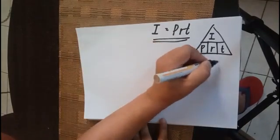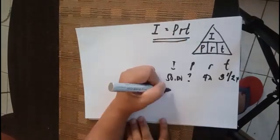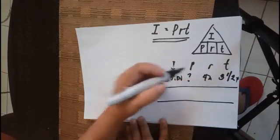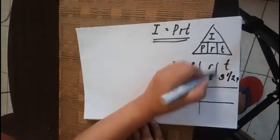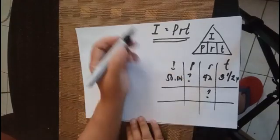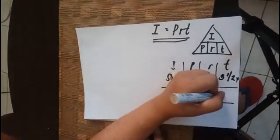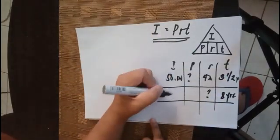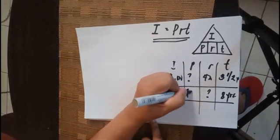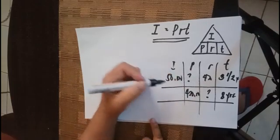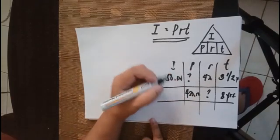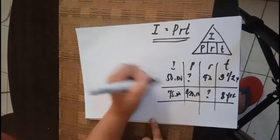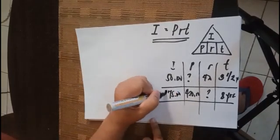I will put a sample problem here and then we compute. In this second problem, the missing value is the rate. The time is eight years, the principal is four hundred twenty thousand, and the interest is three hundred seventy-five thousand.